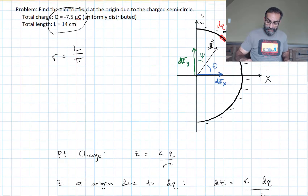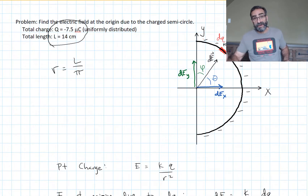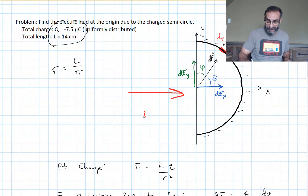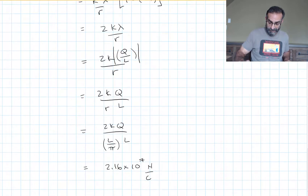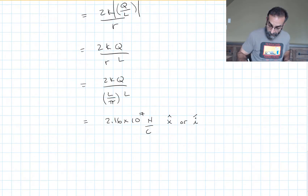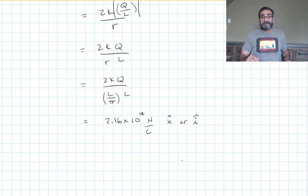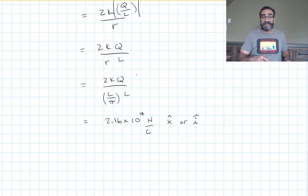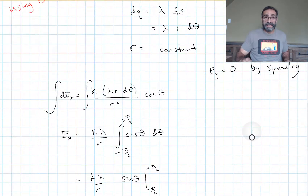Now we need the direction. This is negative charge, so the electric field points toward the negative charge, which means it points in the positive x-direction — the positive i-hat direction in unit vector notation. Don't fall into the trap of putting a negative q in the integral and then saying this is in the negative direction. The integral does not give you the direction; it only gives you the magnitude. You have to figure out the direction yourself.